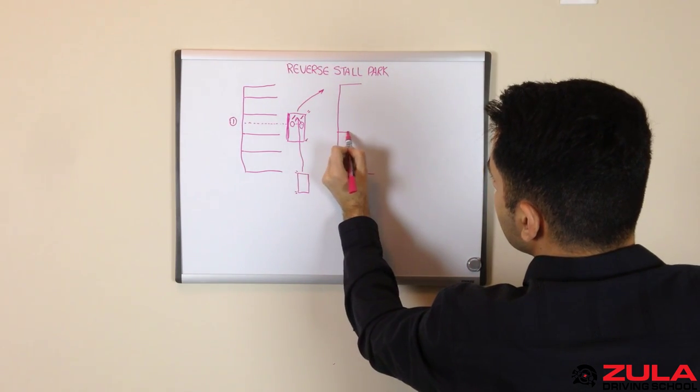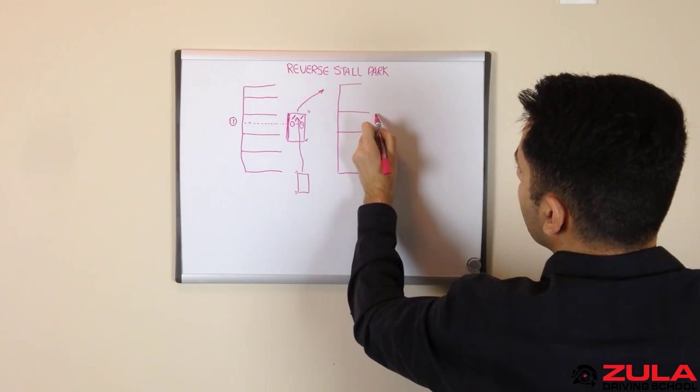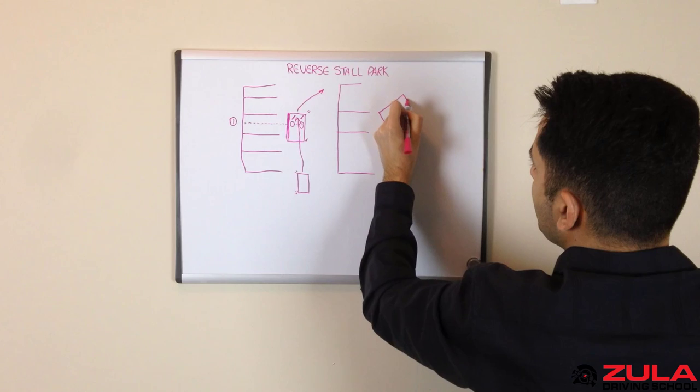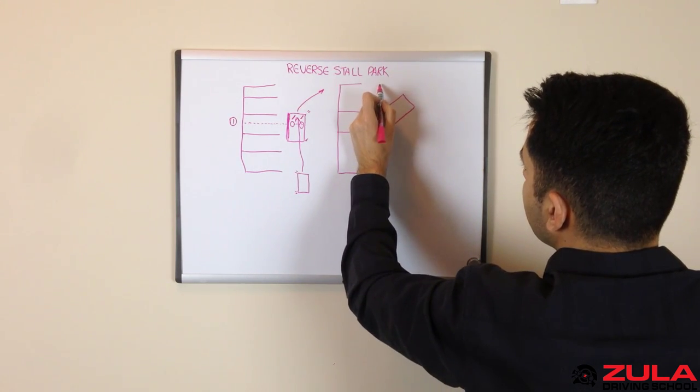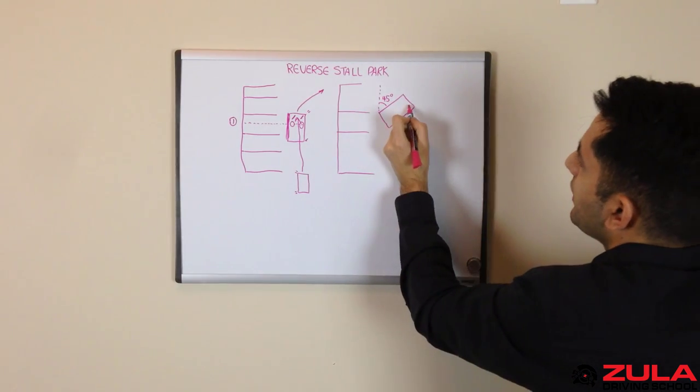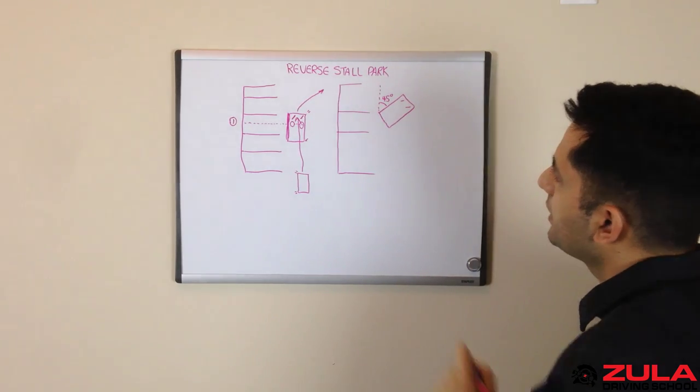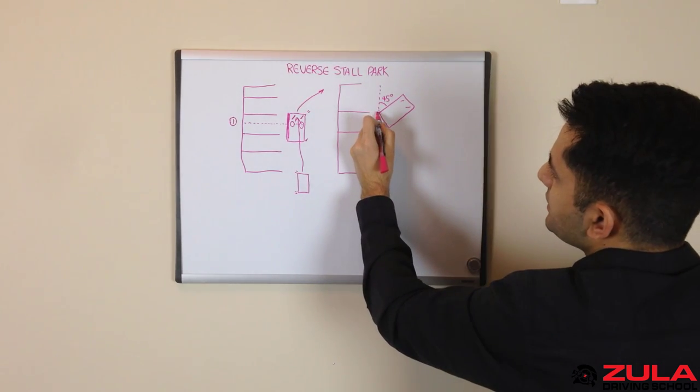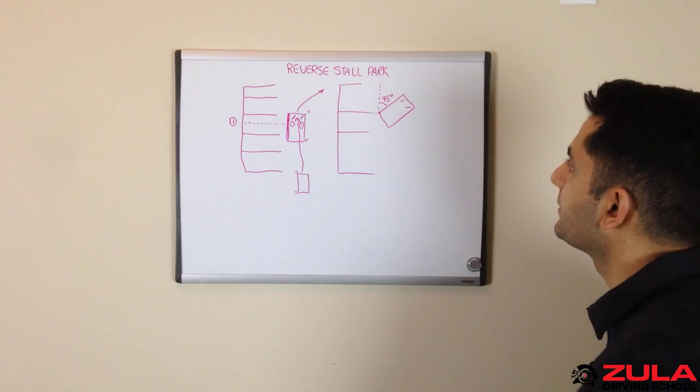So let's say this was the stall that we were interested in. You want to stop when your car has made an angle of about 45 degrees. Now you might be thinking, how on earth do I gauge that? Well, what we want actually is the rear left corner of your car to be in line with this second line of the parking stall that you're interested in.